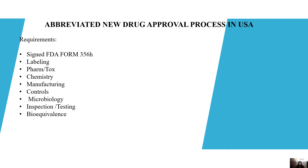Abbreviated new drug approval process in USA. Its requirements are: signed FDA Form 356H, labeling, pharmacology, toxicology, chemistry, manufacturing, controls, microbiology, inspection or testing, and bioequivalence. FDA Form 356H includes the applicant's name and address, name of the drug product, the product strength, route of administration, indication of drug master file cited, and proposed indications.